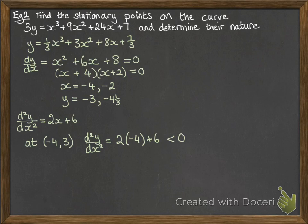So 2 times -4 would be -8, plus 6 is -2. So that is negative. Therefore, that is a maximum at that point.